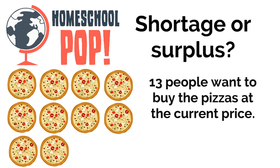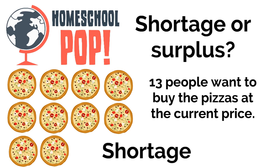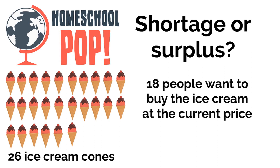A pizza shop has 10 pizzas and there are 13 people who want to buy pizza at the current price. Ten pizzas, thirteen people — is there a shortage or surplus? That's a shortage. There are not enough pizzas to sell to everyone willing to buy at that price. They need to make more pizza so there's no longer a shortage.